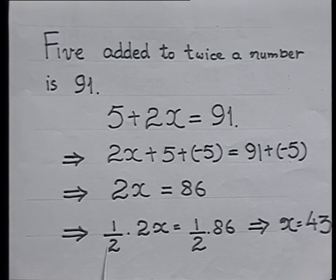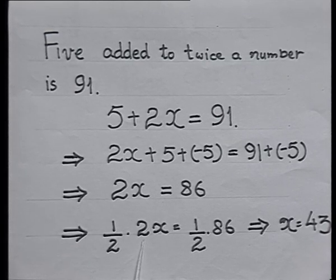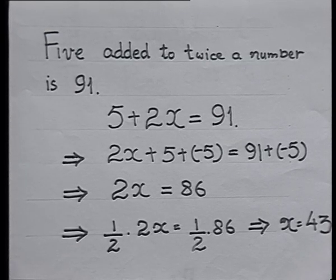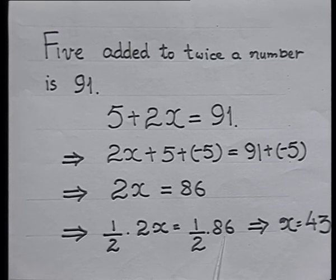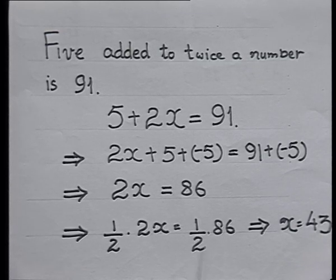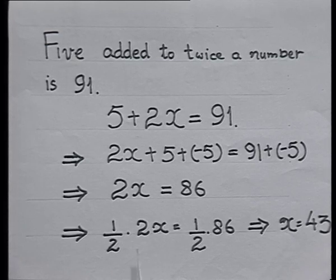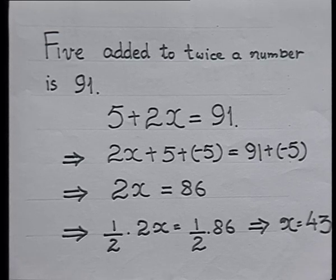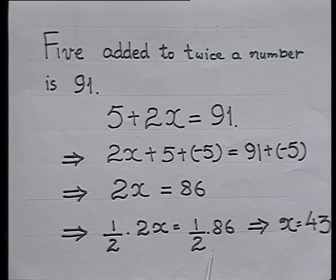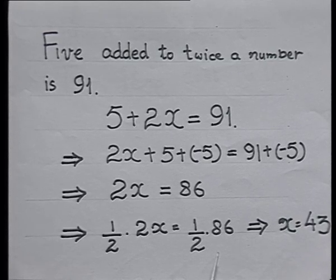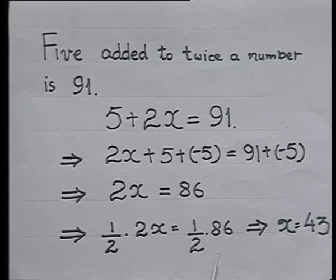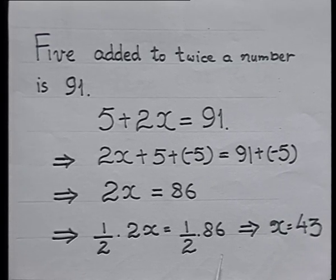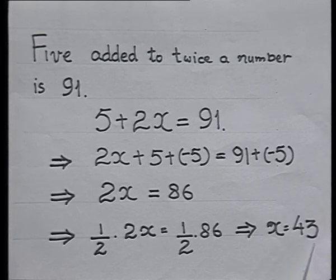Multiplying by 1/2 onto the left-hand side and then multiplying by 1/2 onto the right-hand side. Remember: in an equation, if we multiply by the same number onto both sides, the equation does not change. From there, I get the value of x as 43.